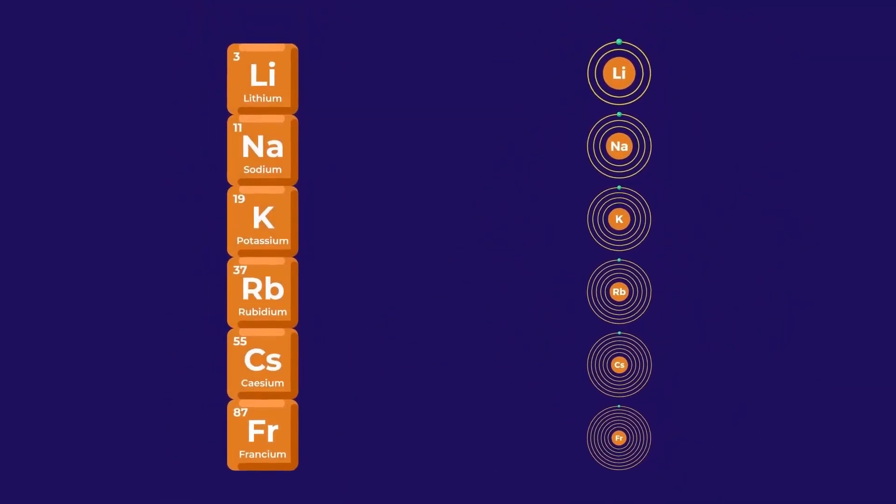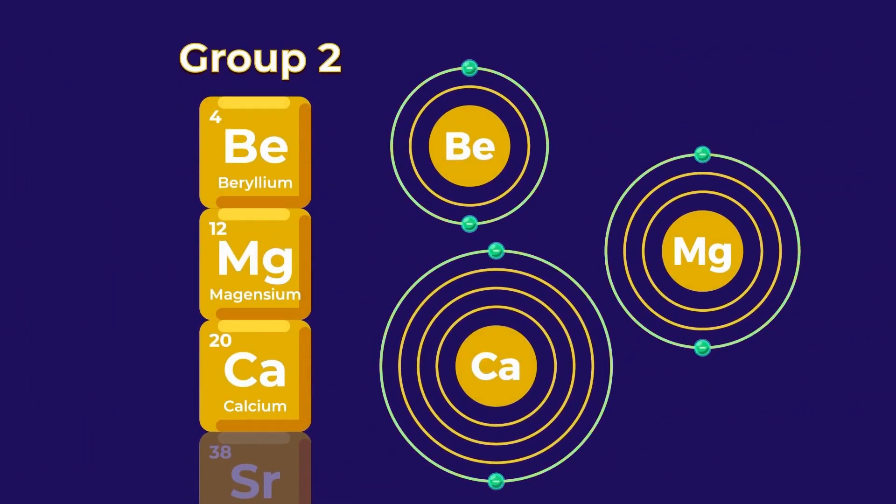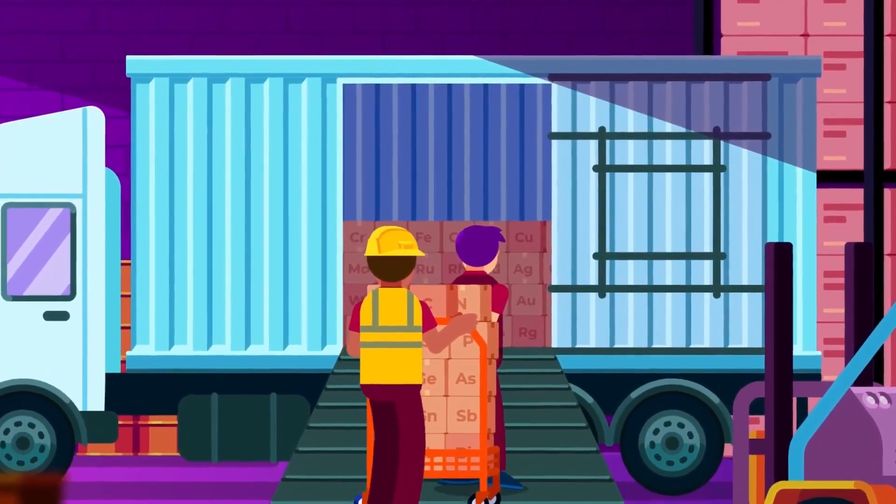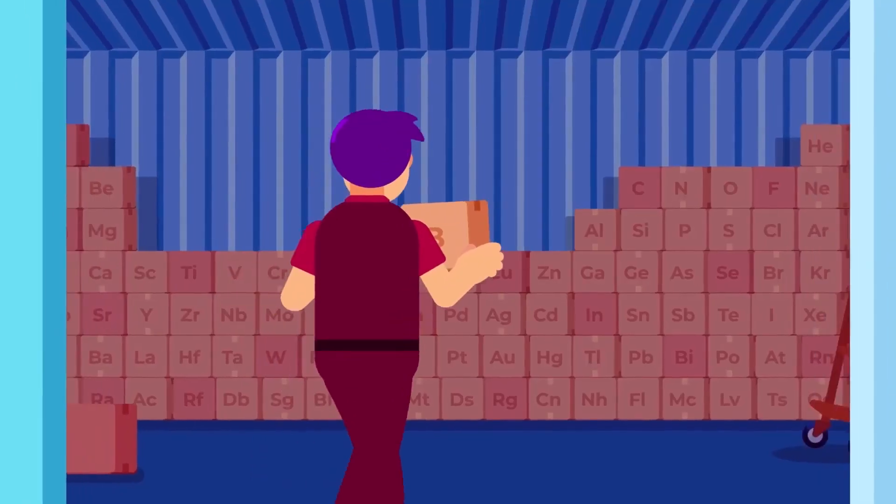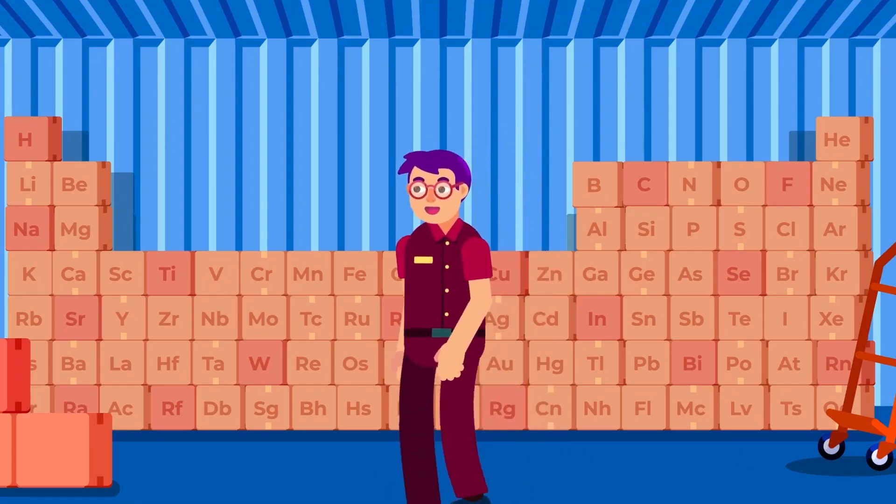For example, all of the elements in group 1 will have one electron in the outermost shell of their atoms, while all elements in group 2 will have two electrons in their outermost shell. This information is incredibly useful for classifying elements into their appropriate groups based on the number of valence electrons.